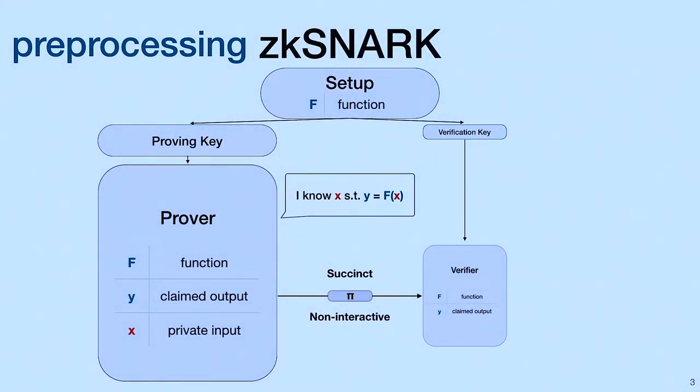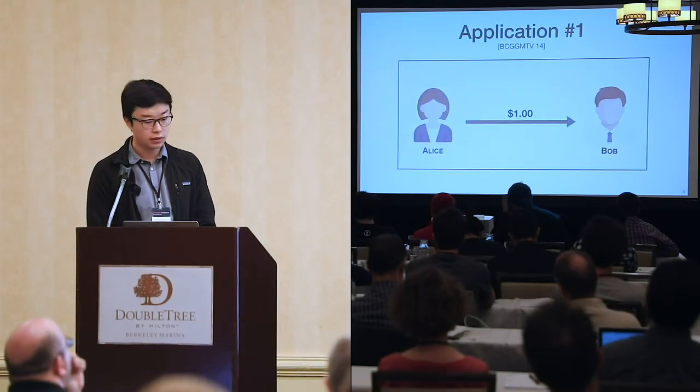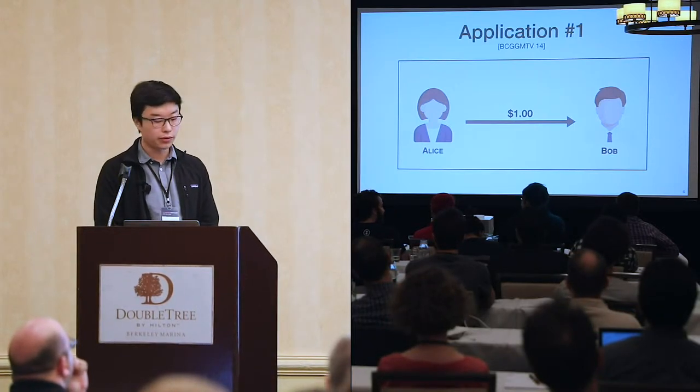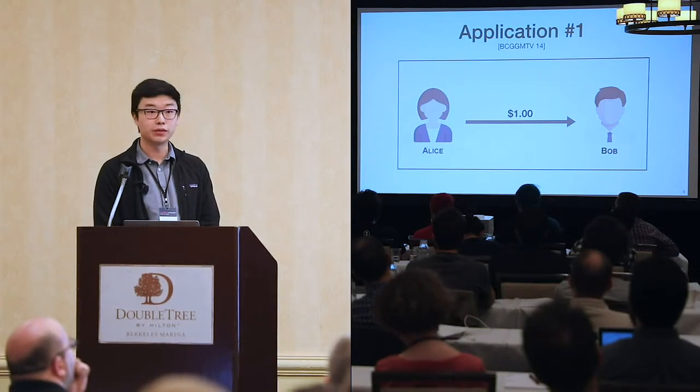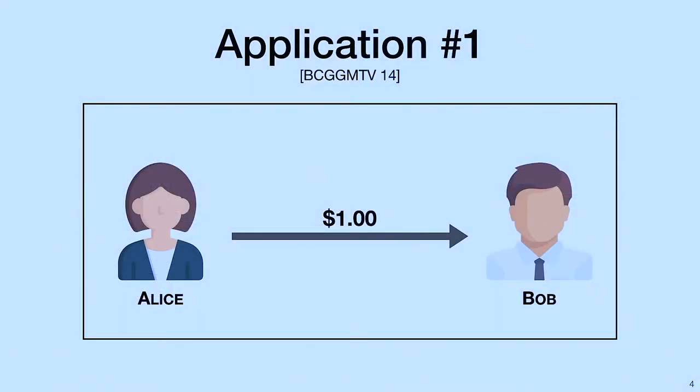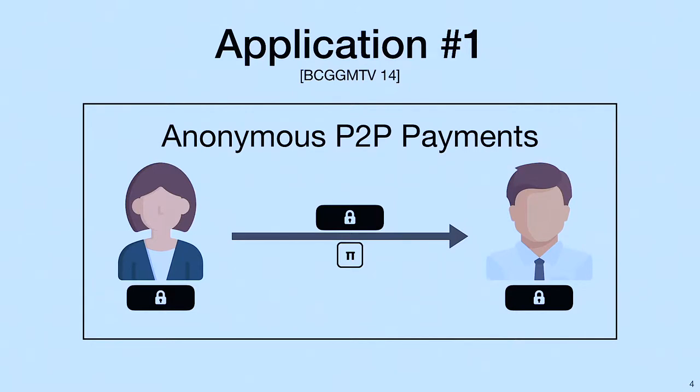ZK-SNARKs have many interesting applications, two of which we'll discuss today. The first application is peer-to-peer payments. Suppose Alice wants to pay Bob a dollar. She may use a blockchain to facilitate this payment. However, this would reveal that she's the sender, that Bob is the receiver, and that the payment amount is a dollar. Instead, Alice could encrypt these details, encrypting the content of the payments, and attaching a ZK-SNARK proof, attesting to the validity of the payment details. This is actually a protocol called ZeroCash, which has manifested in industry as Zcash.